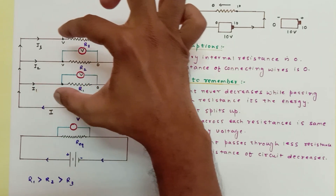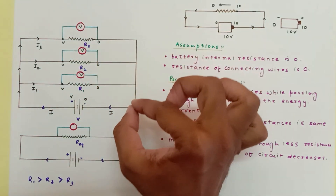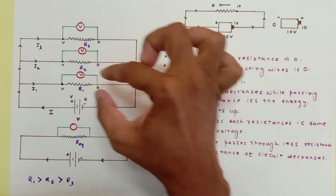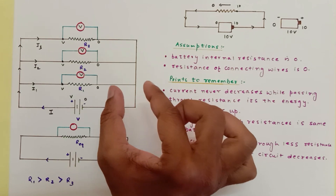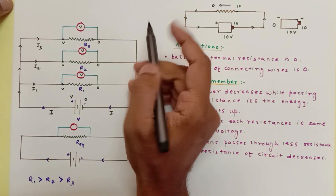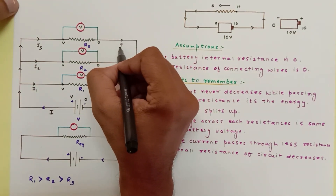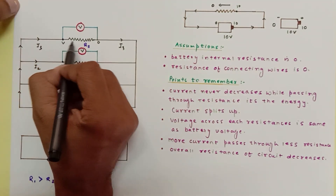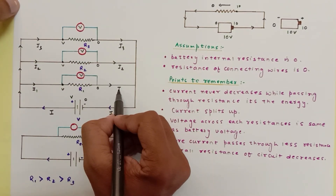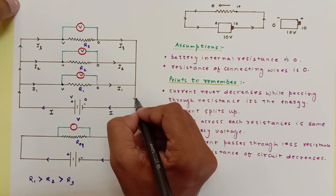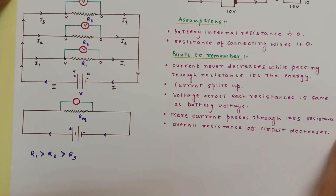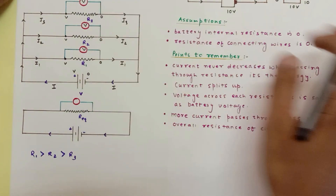These three parts add up again to form the same amount of water that came out — so the total current I is restored. The current doesn't decrease when passing through resistance; it remains the same. I1, I2, and I3 all recombine to form I. I've also assumed that R1 is the largest resistance of the three.